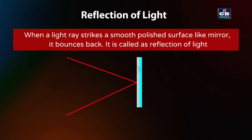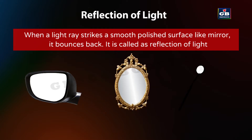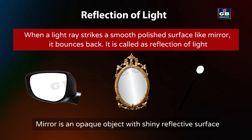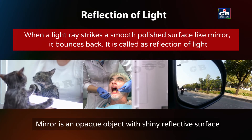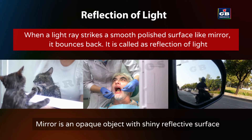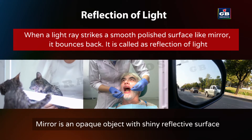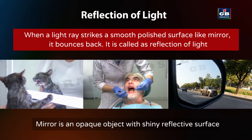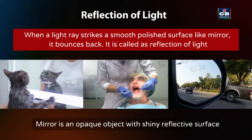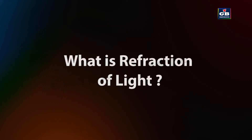We can study the reflection of light with the help of mirrors. A mirror is an opaque object with a shiny reflective surface. It is because of the reflection of light that we are able to see our images in mirrors.